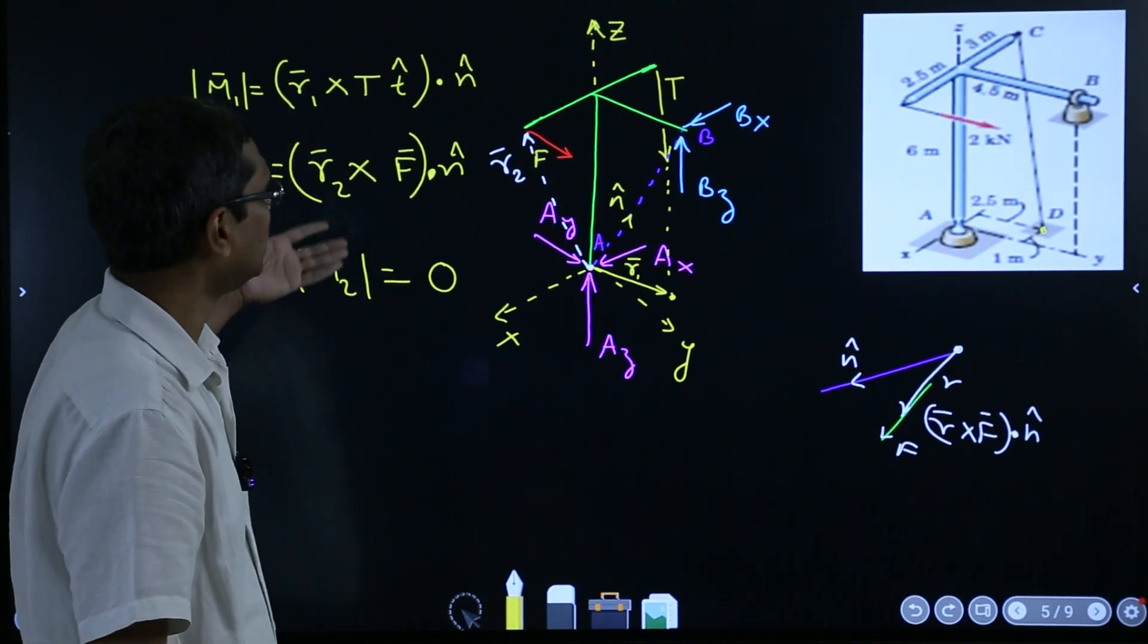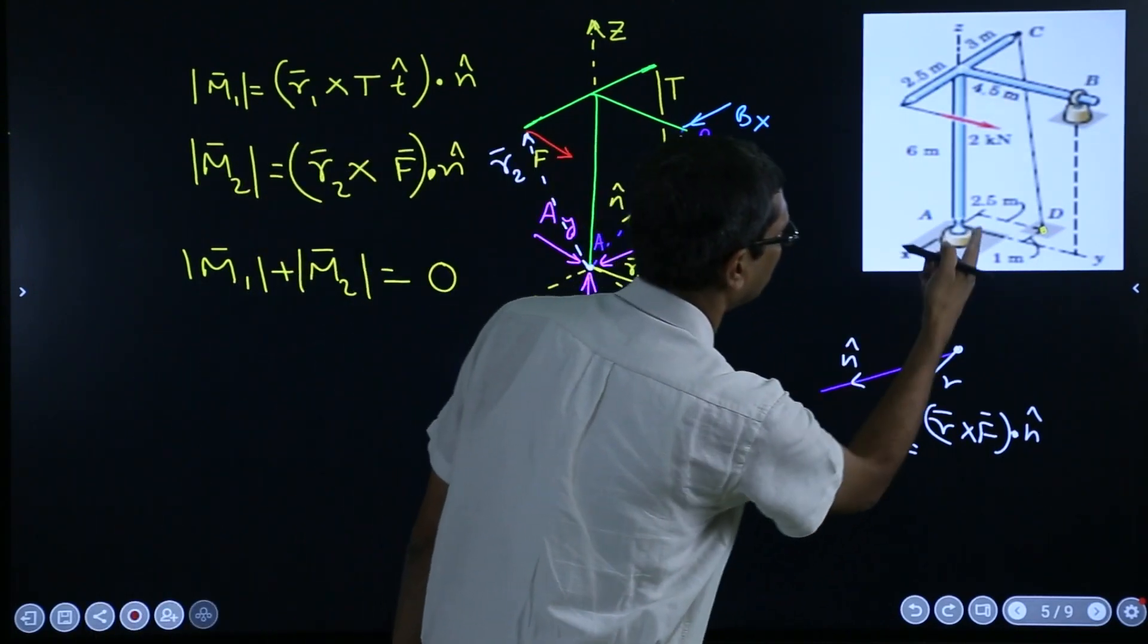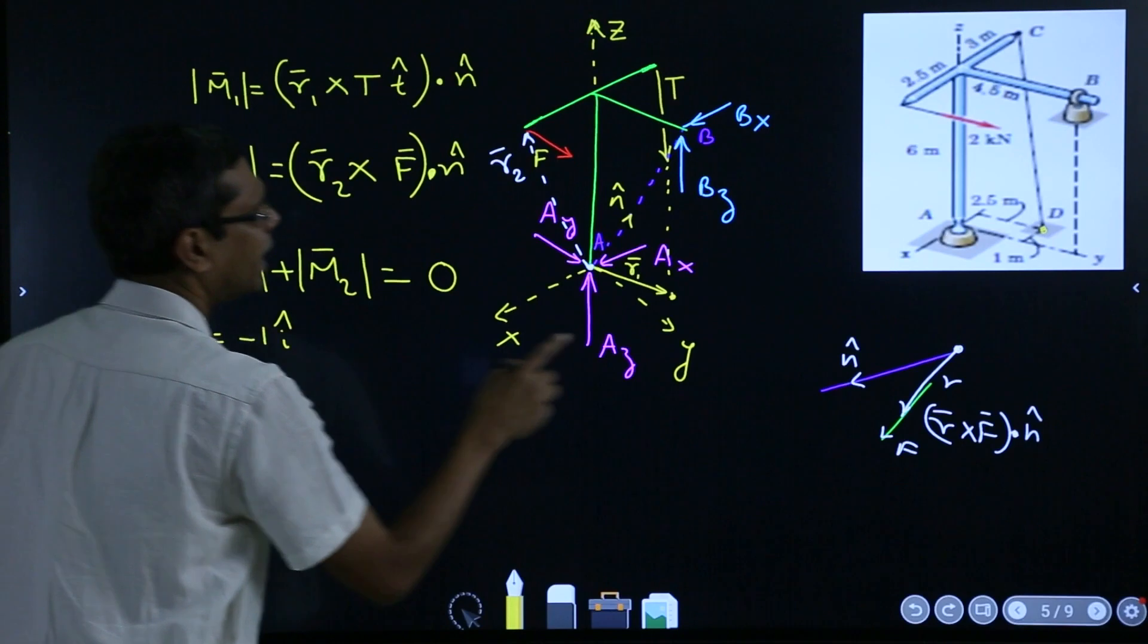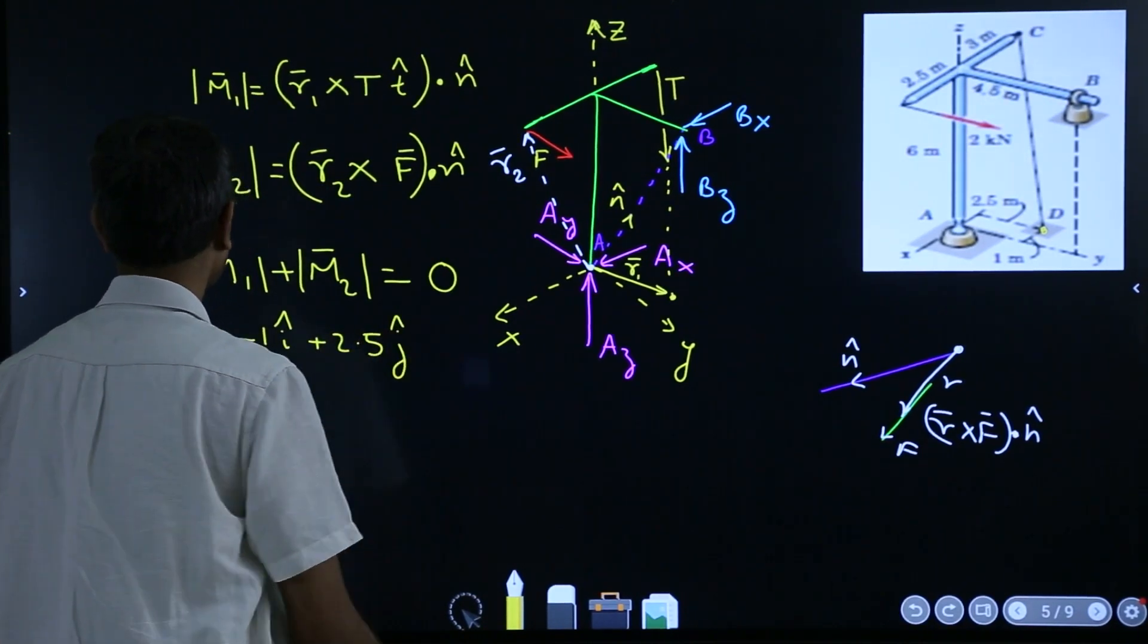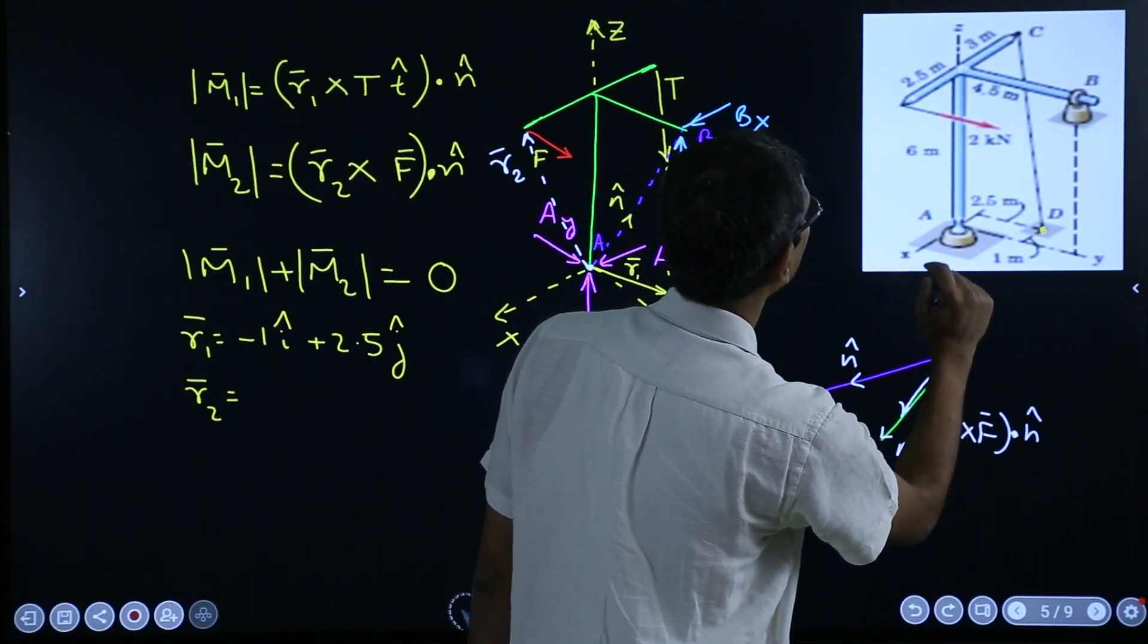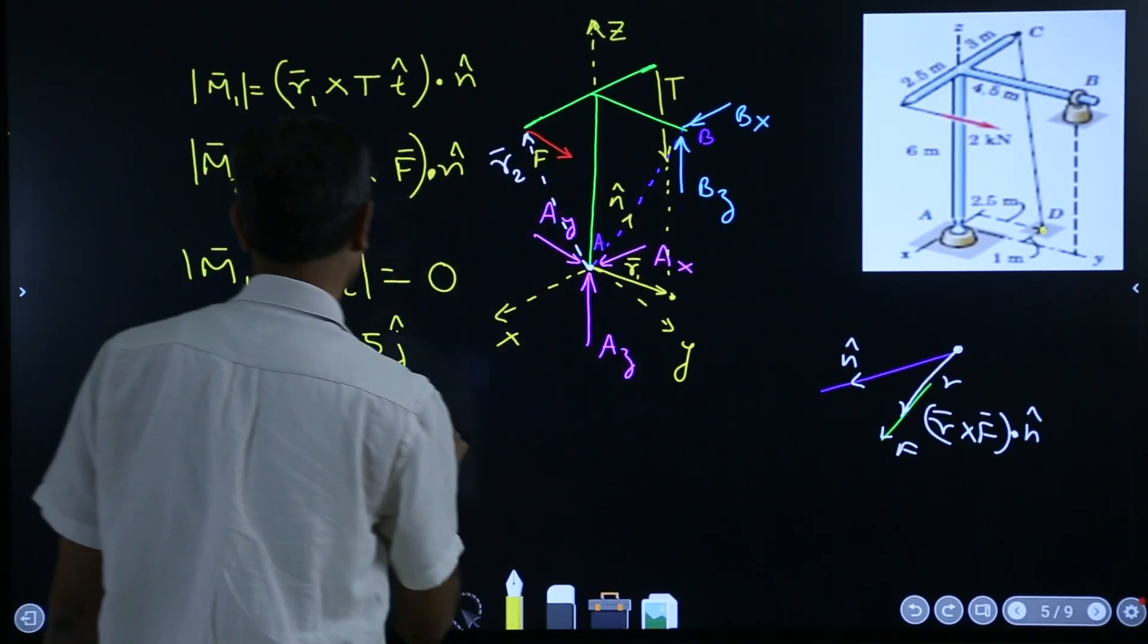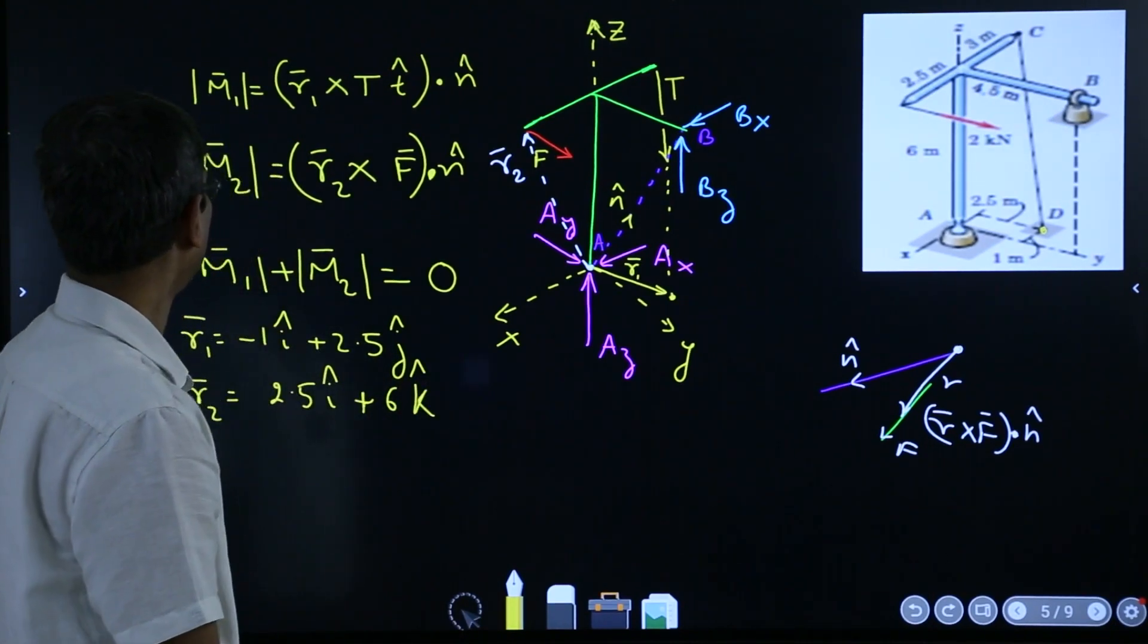Right? So that's the only thing which you need to do. And shall I write what R1, R2, T you should get. Let me see. R1, what should be the R1? You are moving in X direction by minus 1 unit. For example, say R1 is equal to minus 1i and you are coming in Y direction by 2.5 meters. Plus 2.5 J. So that is R1. And how much is R2? What is R2? From here to here. It means you are in X direction, you are coming 2.5 meters. So 2.5i plus 6k. Right? So these are R1 and R2.